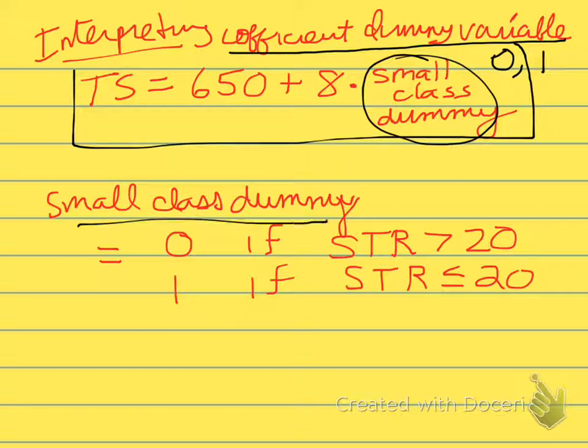So the small class dummy takes on values 0 or 1. It takes on value 1 if the student-teacher ratio is less than 20, it takes on value 0 if the student-teacher ratio is greater than 20.